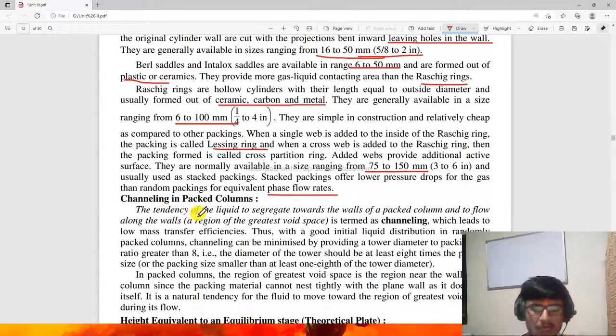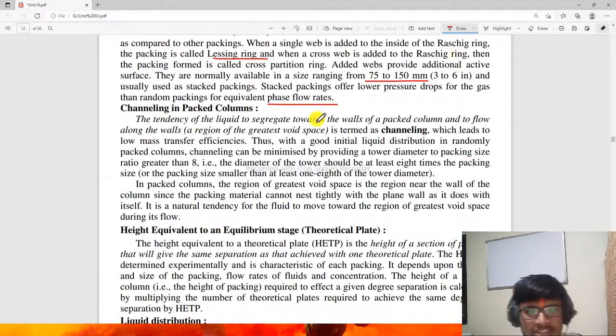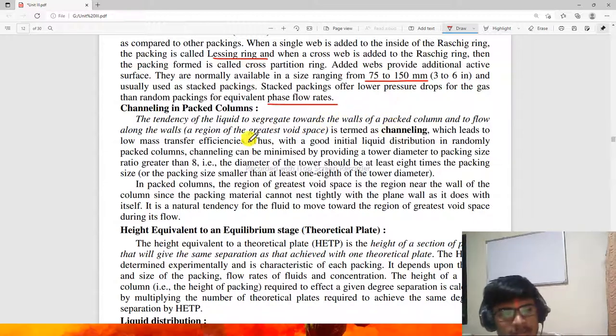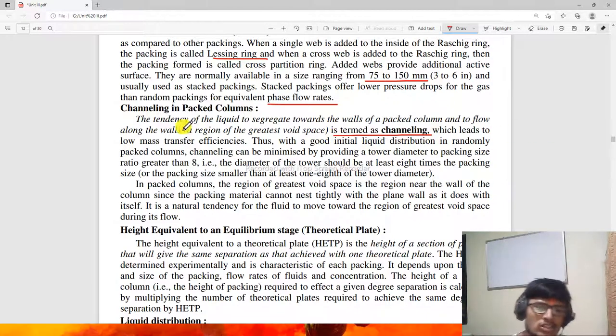Channeling in packed columns refers to the tendency of liquid to segregate towards the wall. The flow along the wall is termed channeling, which leads to low mass transfer coefficient. Good initial liquid distribution in randomly packed columns and channeling is minimized by providing a tower diameter to packing size ratio greater than 8. The diameter of the tower should be at least 8 times the packing size.